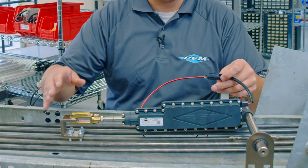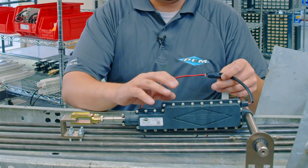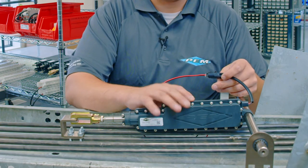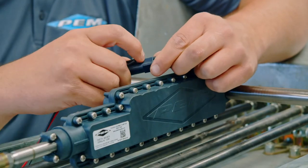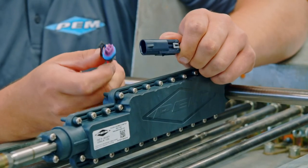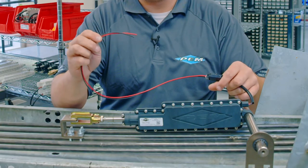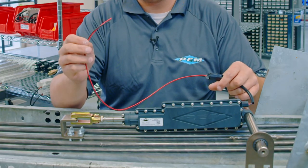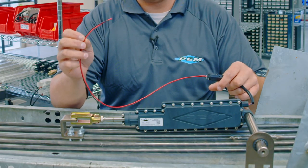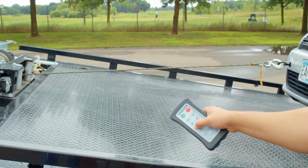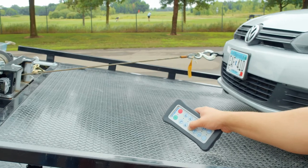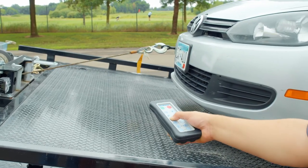Finally, and potentially the most important consideration, the actuators should have a single 10 amp fuse spliced into the red power wire. This is true whether or not there is a single actuator being used or up to six actuators. There needs to be a 10 amp fuse spliced into the common power wire. PEM recommends putting the fuse in an accessible location that is not exposed to the elements.